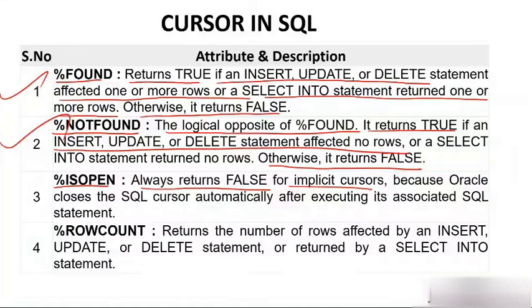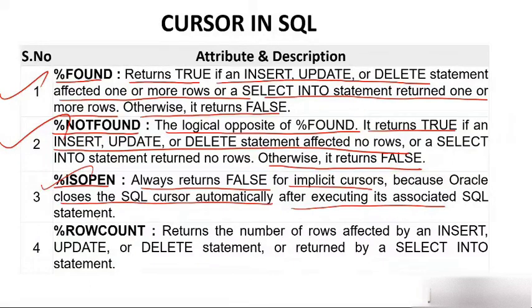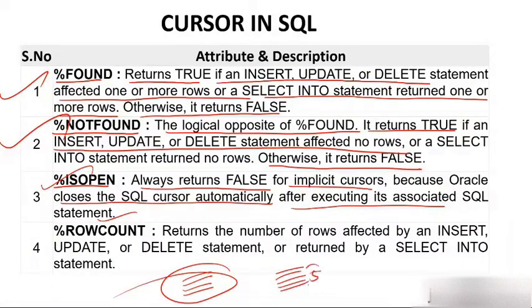Oracle closes the SQL cursor automatically after executing its associated SQL statement, so %ISOPEN always returns false for implicit cursor. %ROWCOUNT returns the number of rows affected. Suppose by UPDATE I have affected 5 rows — %ROWCOUNT will return 5. Similarly for DELETE or INSERT of 5 rows, %ROWCOUNT will reflect 5.